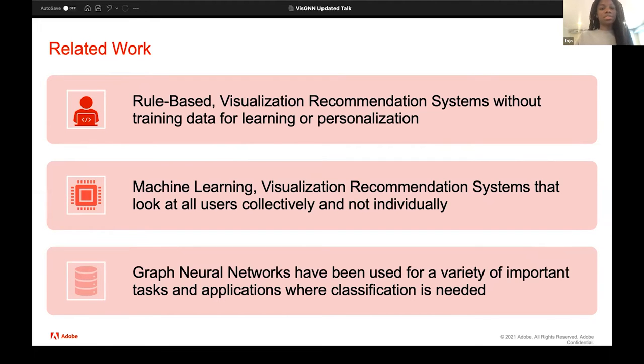Machine learning visualizations, however, do use learning, but look at global visualization models and not individuals. And then we're interested in using graph neural networks because they have been useful for a variety of powerful tasks and applications that involve large amounts of data where the data is heterogeneous. And GNNs can overcome the issue of disjoint datasets, which is a common issue and challenge when trying to personalize data from datasets.